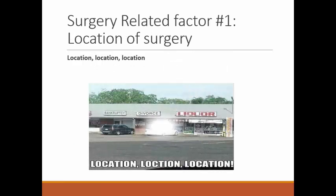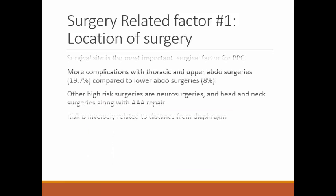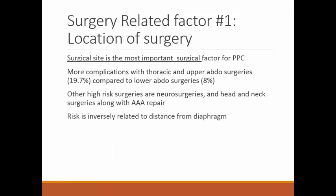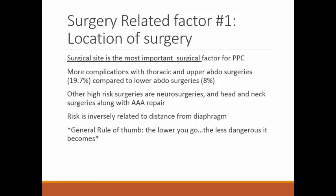Location, location, location — surgical site is the most important surgical risk factor for postoperative pulmonary complications. More complications occur with upper thoracic and upper abdominal surgeries compared to lower abdominal procedures. Higher-risk surgeries include neurosurgery, head and neck surgery, and AAA repairs. Surgical risk is inversely related to distance from the diaphragm — the lower you go, the less dangerous it is for postoperative pulmonary complications.